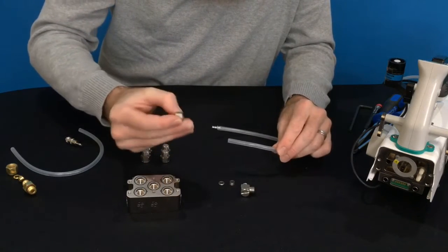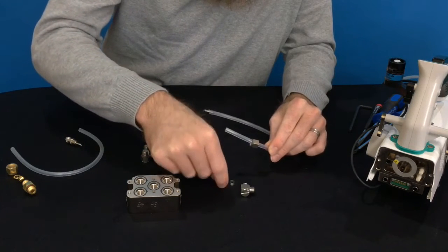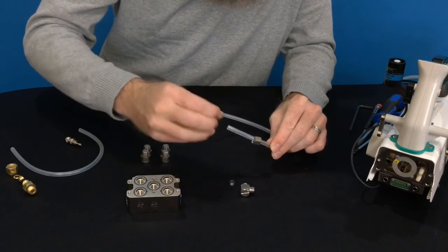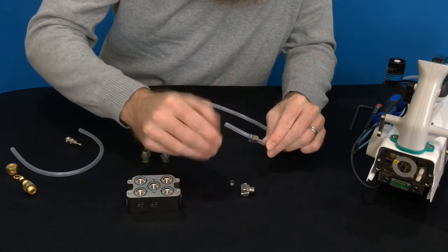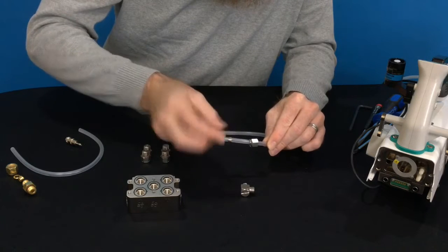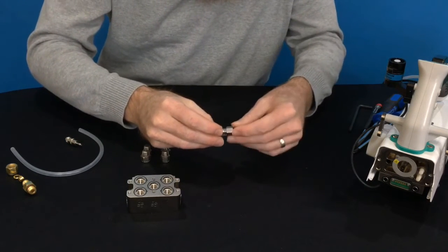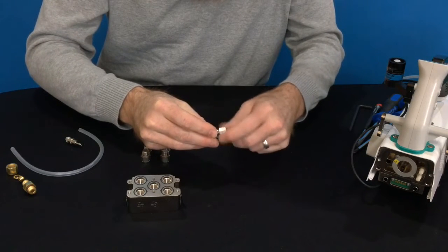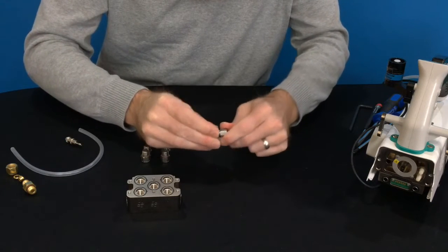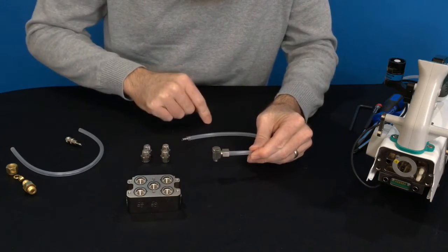So the first thing that goes on the tubing is a compression nut, and then there's a small bearing ring, a ferrule, and that goes taper side towards the larger portion of the fitting. And then these guys screw together, and we would take a wrench and tighten that to compress that ferrule down around the tubing.